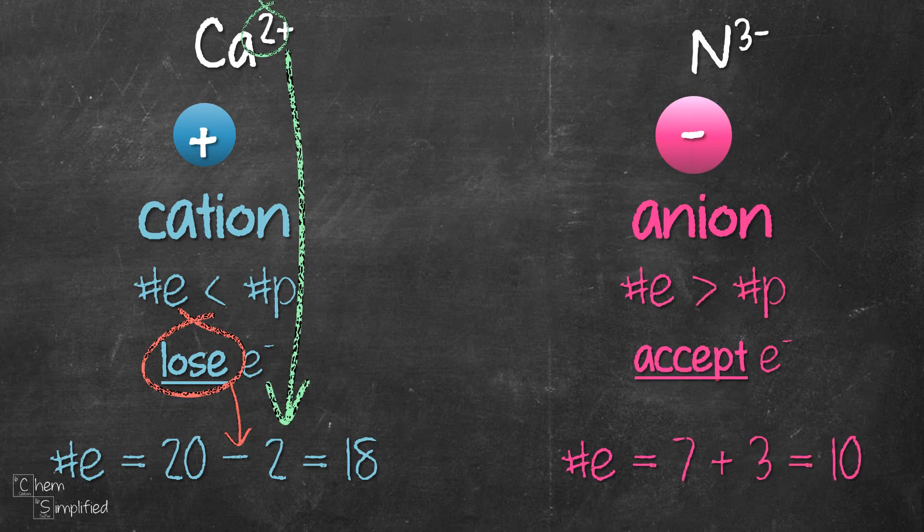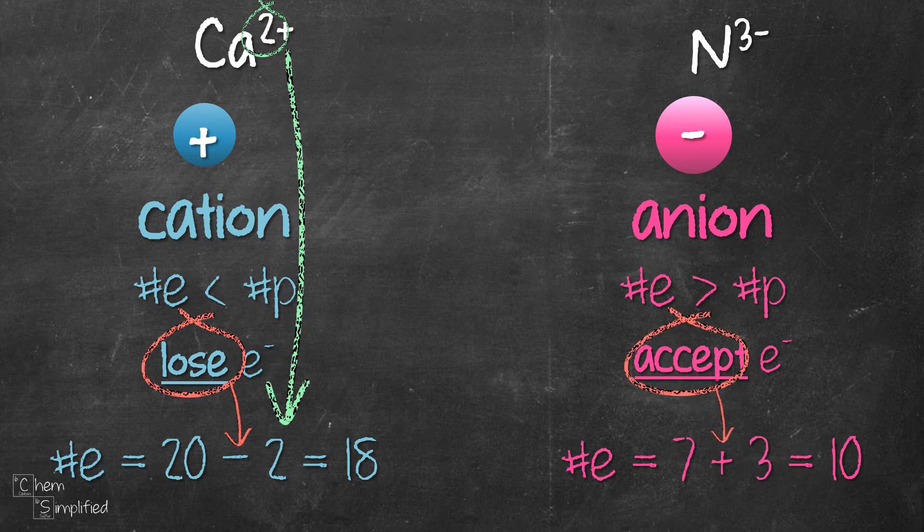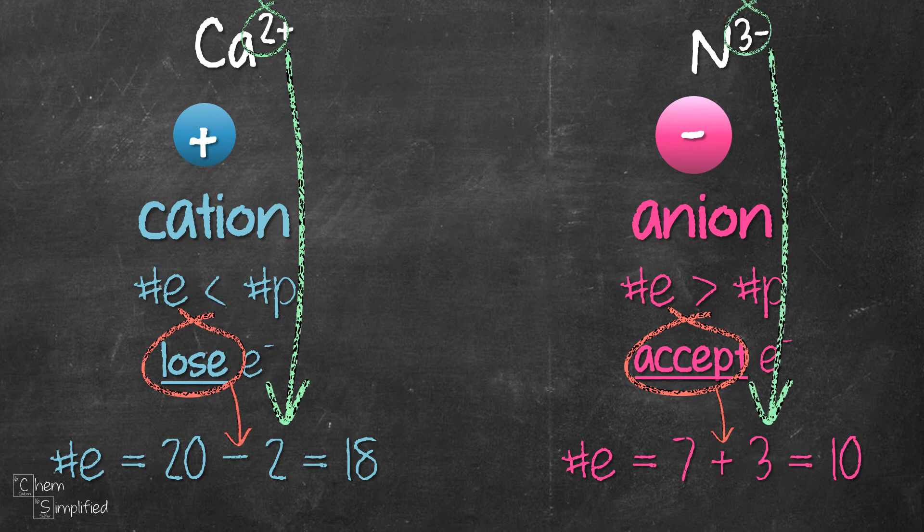For anions, the atom accepts electrons. Therefore, we add. Since the charge of the nitrogen ion is -3, we add 3.